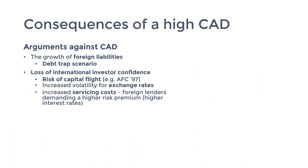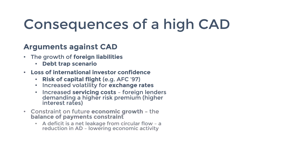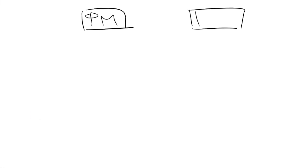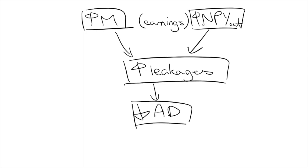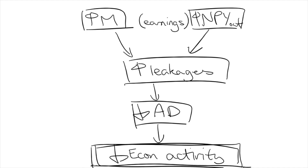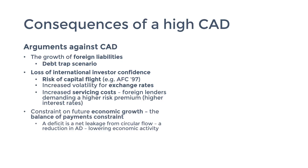The next consequence of a CAD is that it's a constraint on future economic growth. What a BOGS deficit and NPY deficit have in common is that they both represent outflows of non-reversible earnings going overseas. They're leakages to the economy and therefore will cause aggregate demand to fall and the economy to contract as they increase. This is called the balance of payments constraint, and this is what led Prime Minister Paul Keating to warn that Australia would become a banana republic if we didn't get our CAD under control.